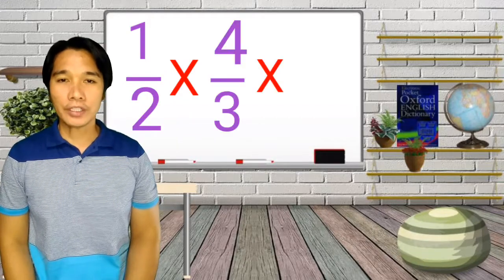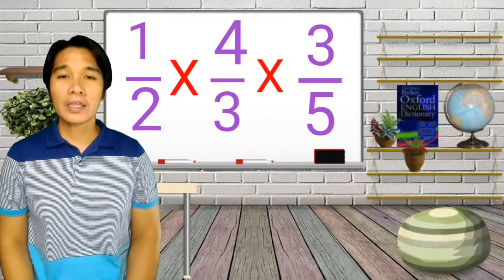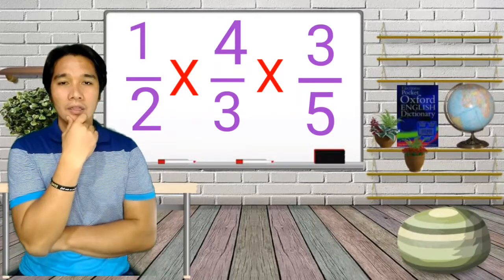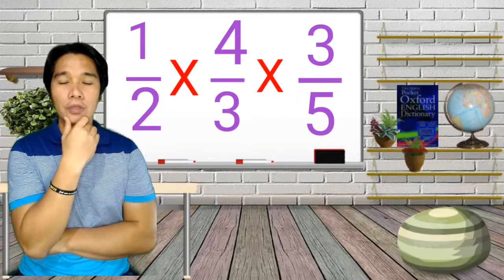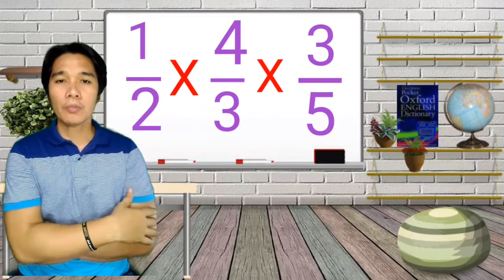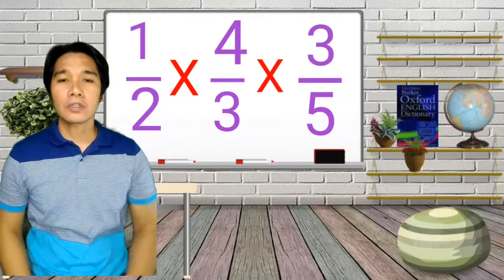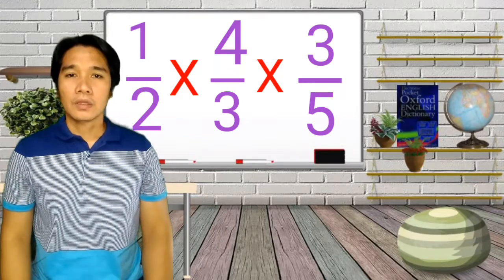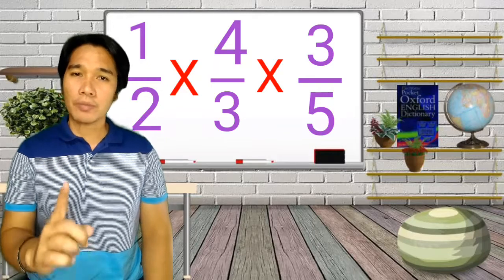Alright! So, let us have one more example. Let us try 1 half multiplied by 4 third multiplied by 3 fifth. Wait a minute! It has 3 fractions multiplied together, and the middle one looks like improper fraction because the numerator is bigger than the denominator. Does our steps work for this problem too?